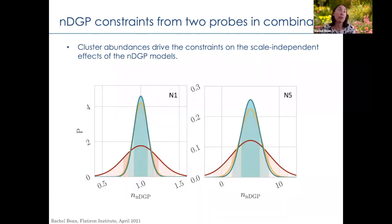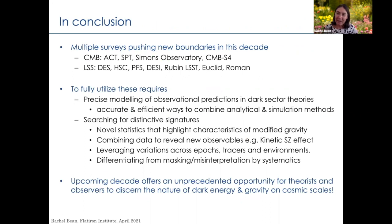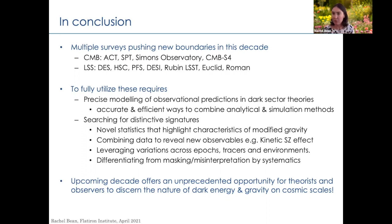For the nDGP model — an alternative modified gravity model with less scale dependence than f(R) — the cluster abundances are really driving the constraints. That was my tour through three recent papers. I hope I've advocated that there are interesting statistics requiring the combination of large-scale structure and CMB datasets, interesting things to do by looking at new environments like voids revealed by spectroscopic data, and the power of combining multiple tracers and datasets to reveal different aspects of theories and constrain those parameters.